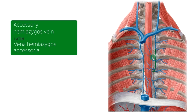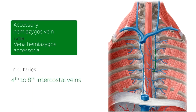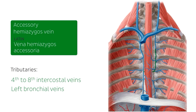The accessory hemi-azygos vein is highlighted here in green — I'm pointing it out with my arrow. The accessory hemi-azygos vein drains the superior left hemi-thorax. It also receives tributaries from the 4th to 8th intercostal veins on the left side, which we can see here, and the left bronchial veins. The accessory hemi-azygos vein goes on to open into the azygos vein, which runs down the length of the thorax on the right, just here.